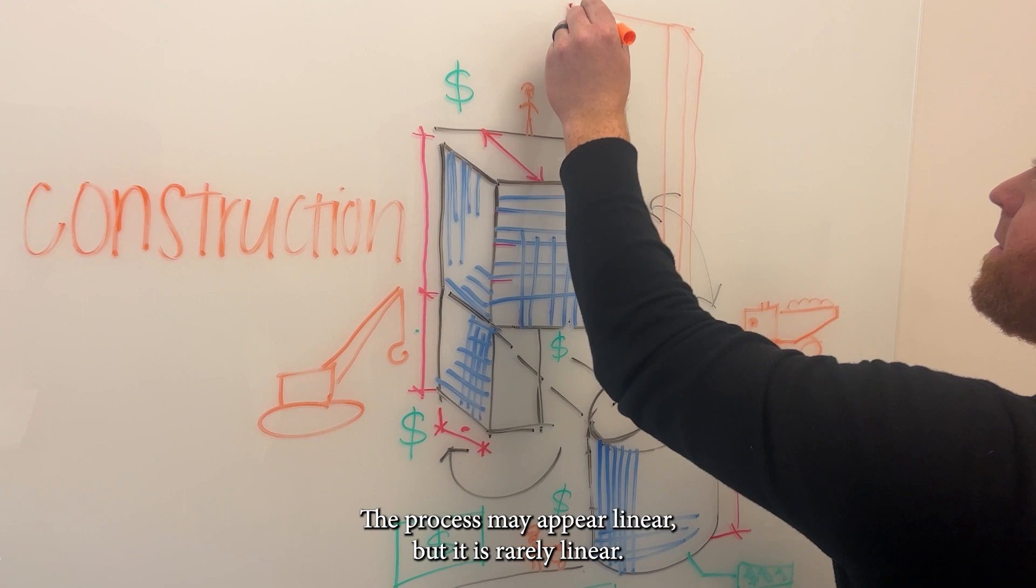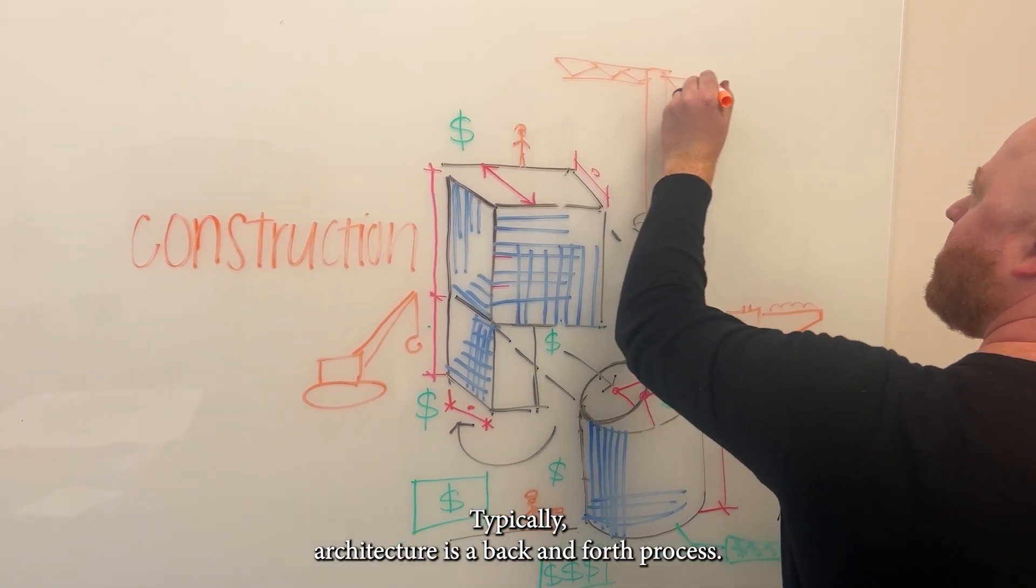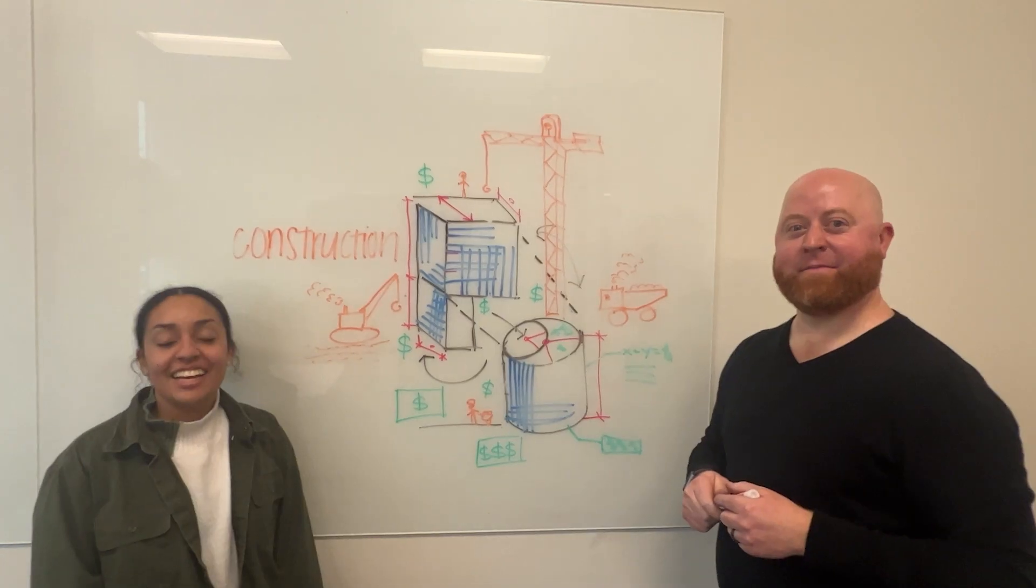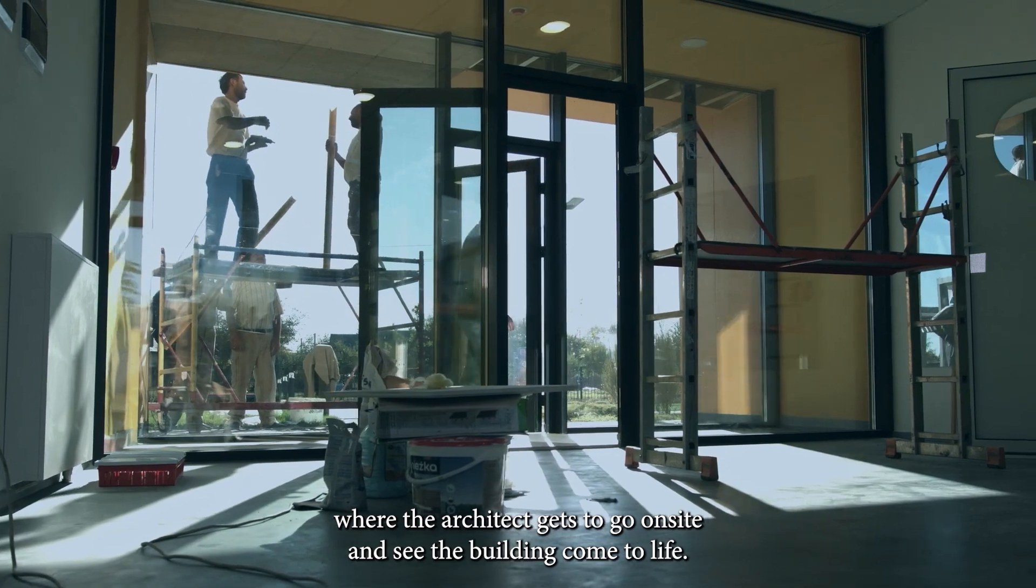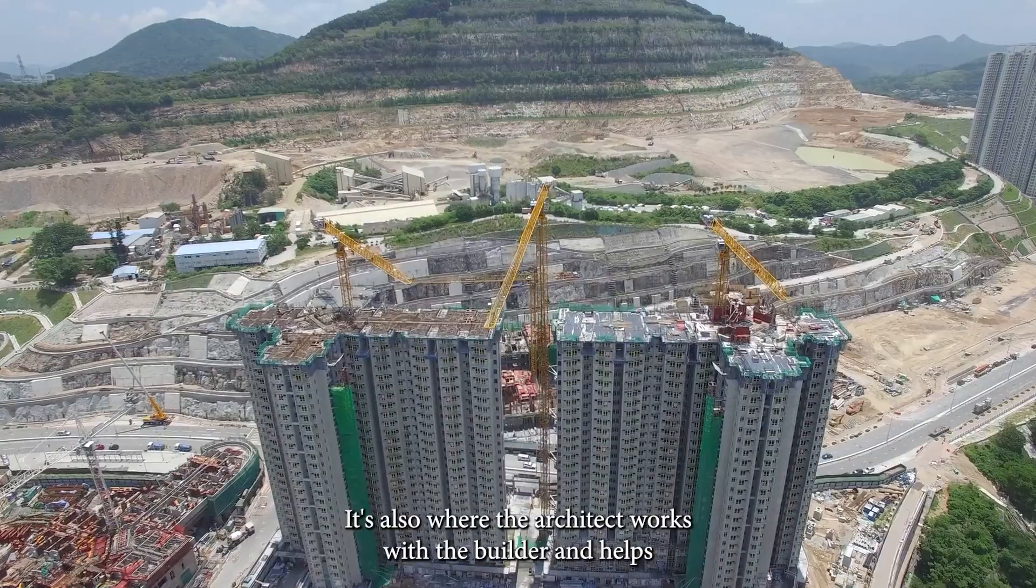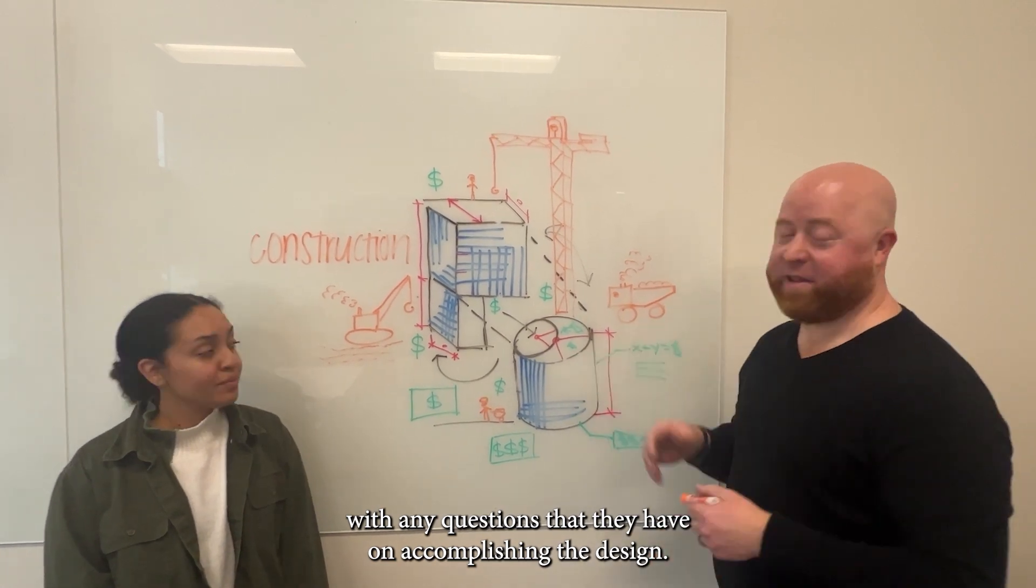The process may appear linear, but it is rarely linear. Typically, architecture is a back and forth process. This is the fun phase of the project where the architect gets to go on site and see the building come to life. It's also where the architect works with the builder and helps with any questions that they have on accomplishing the design.